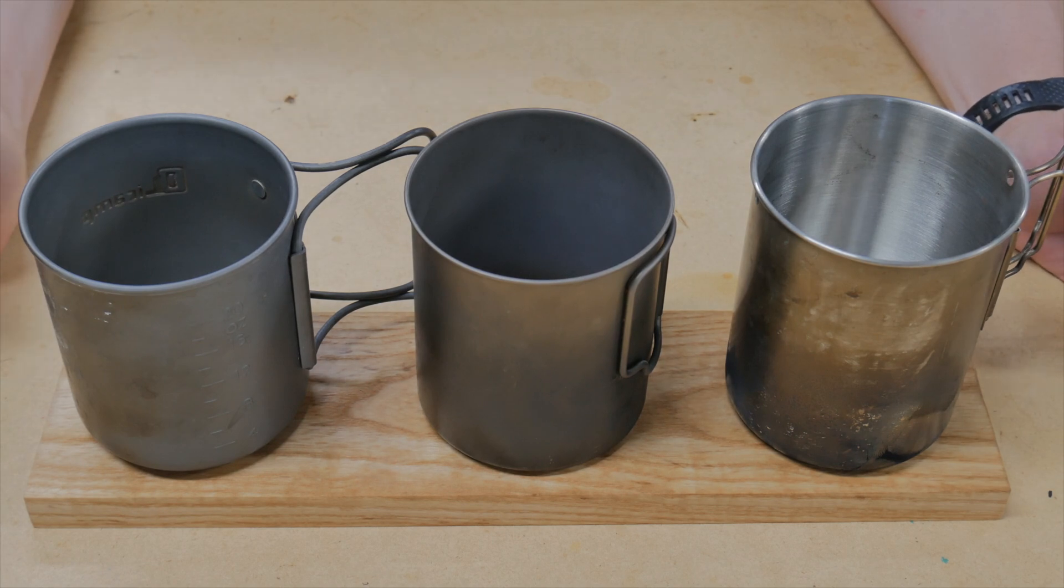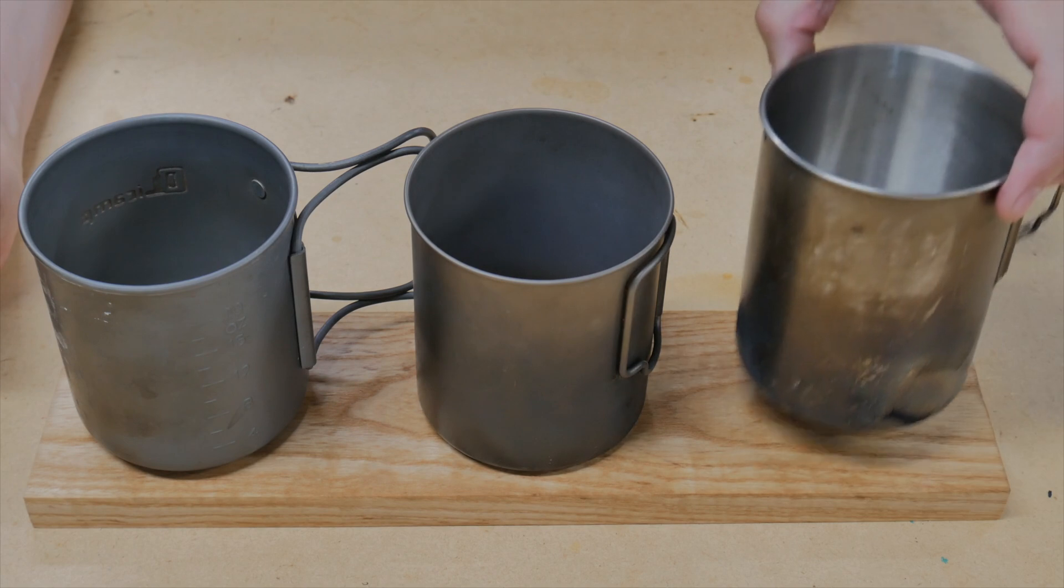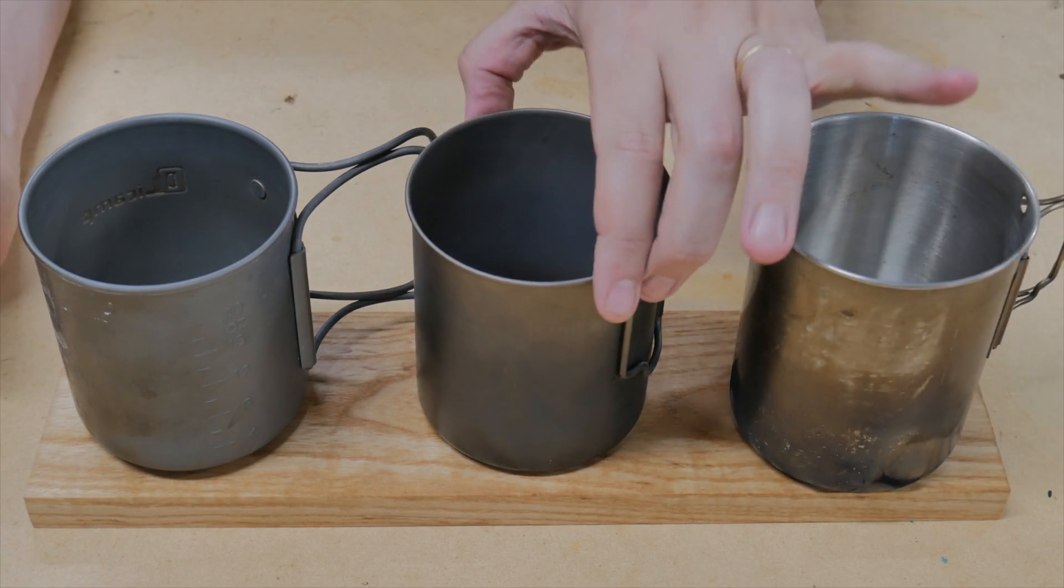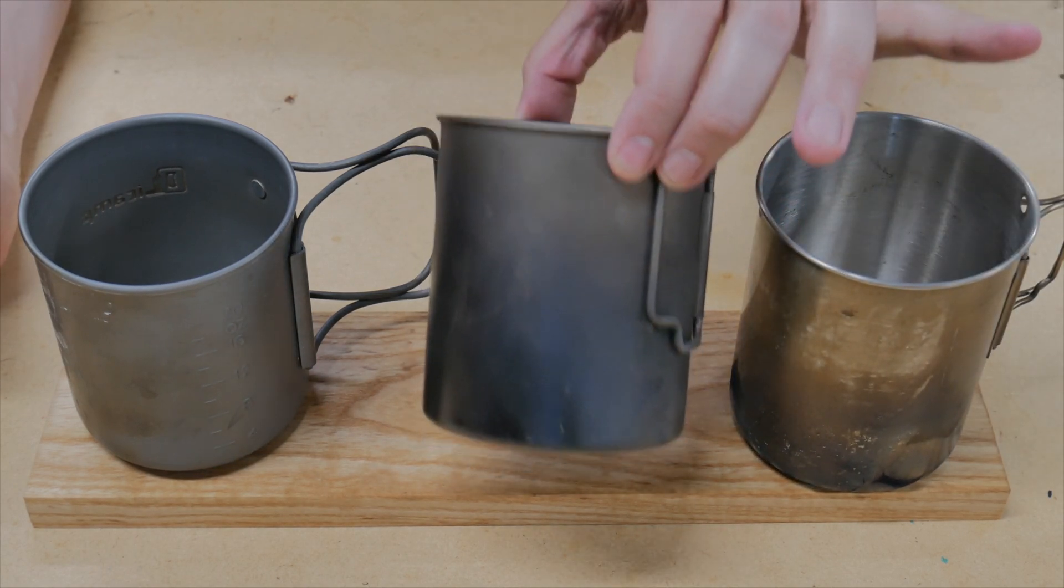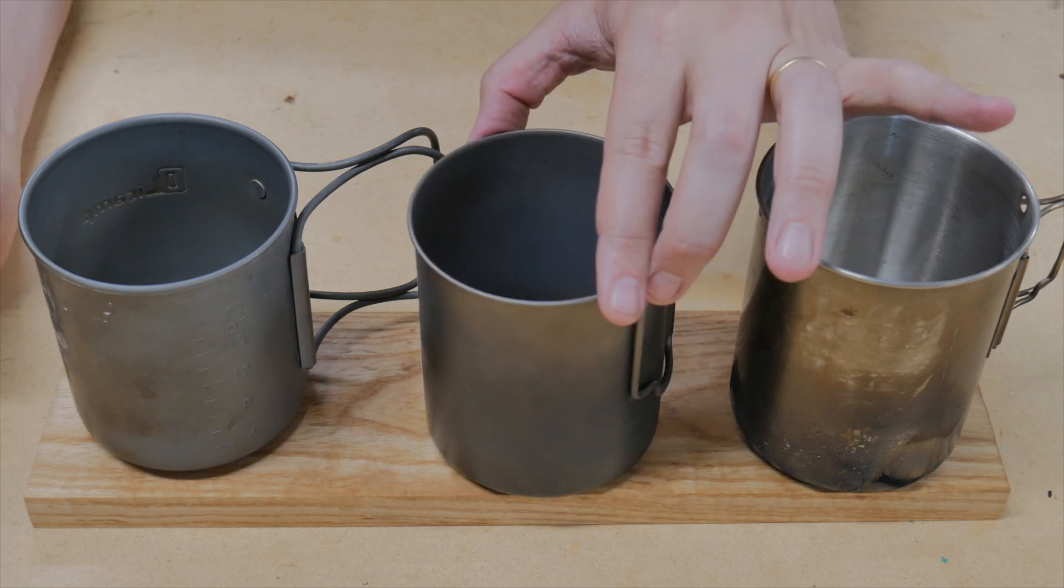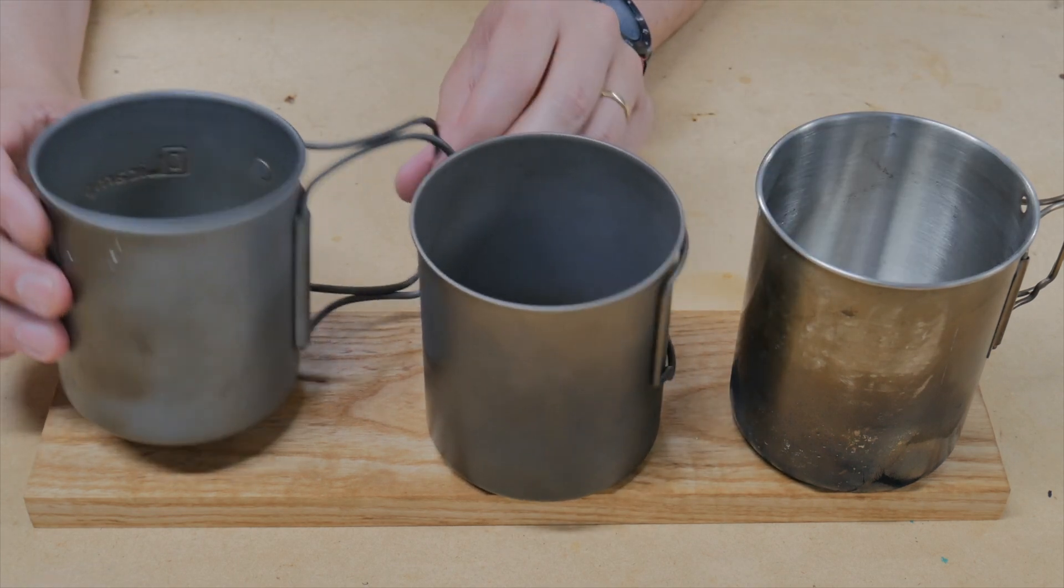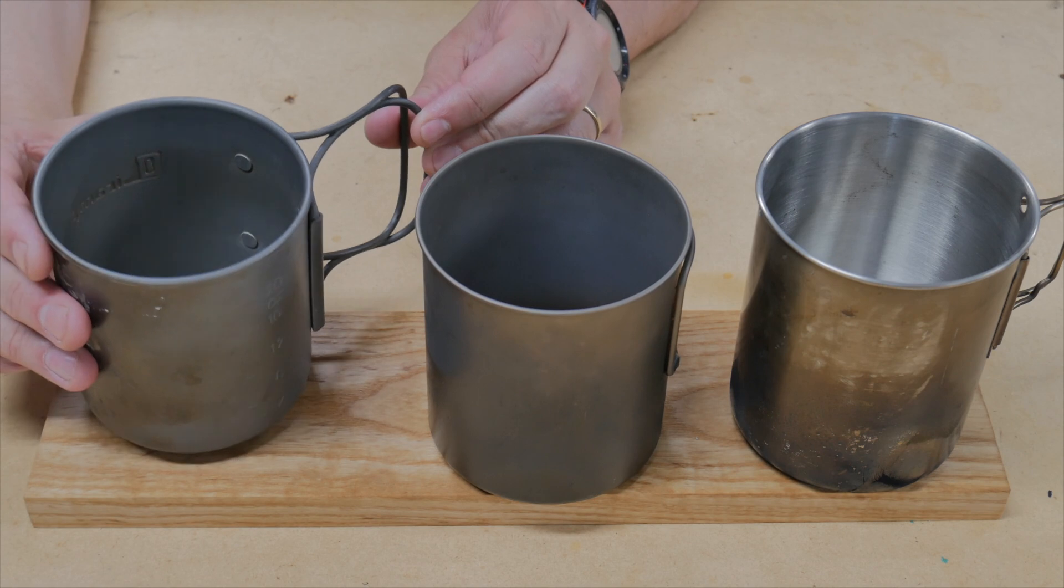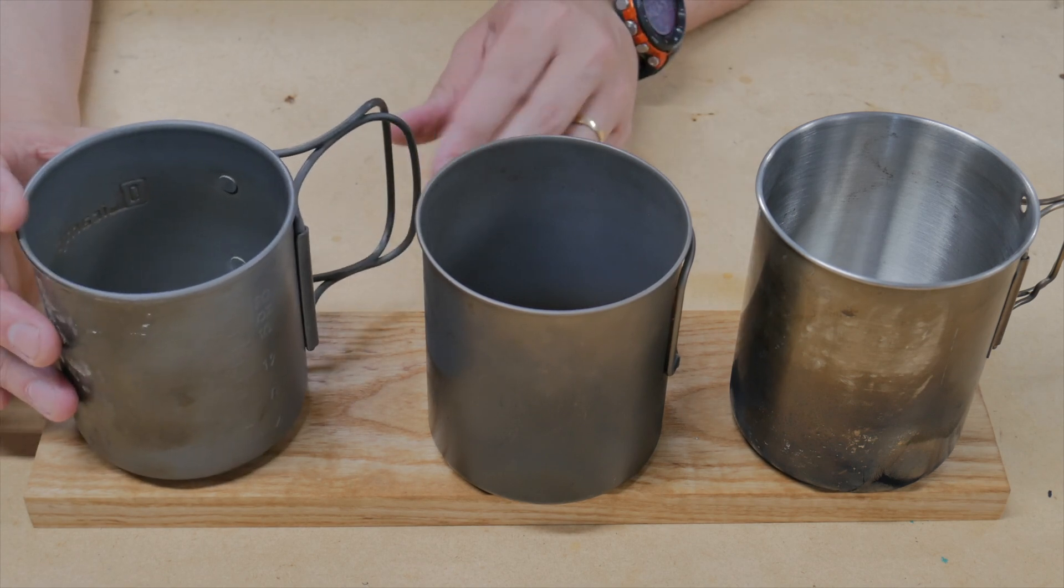Here are three pretty common pots that a lot of people like to use out on the trail. This is the Pathfinder School mug pot made out of stainless steel. This is the Toks 750 milliliter pot. This is my oldest ultralight pot that I have. This is an aluminum pot by Olicamp. Also very popular, very common, and a nice design.